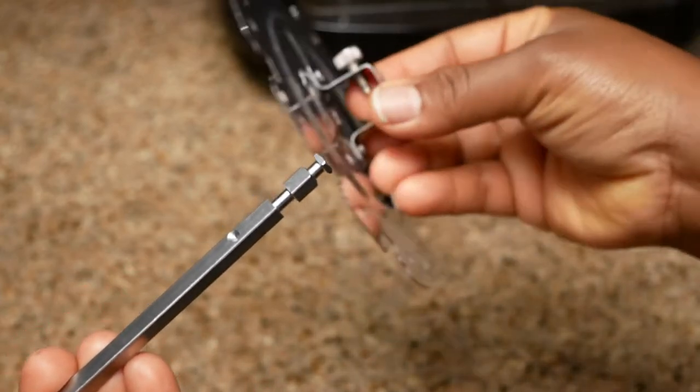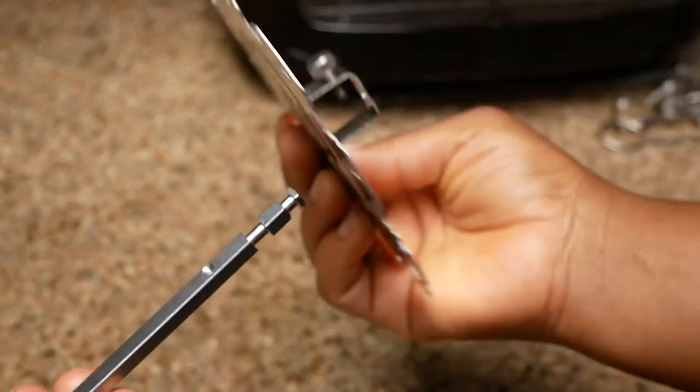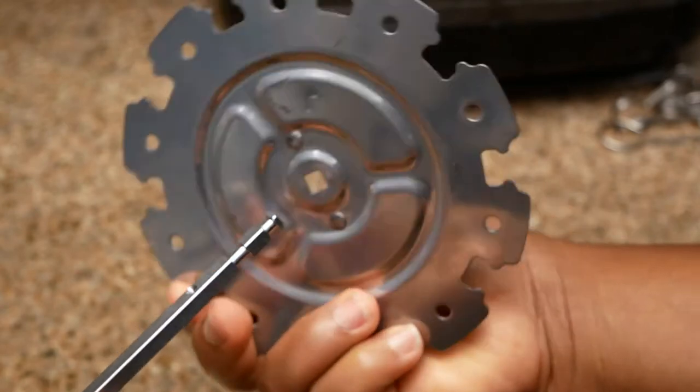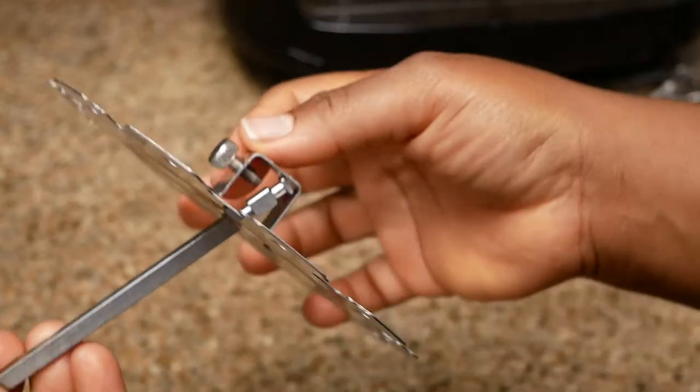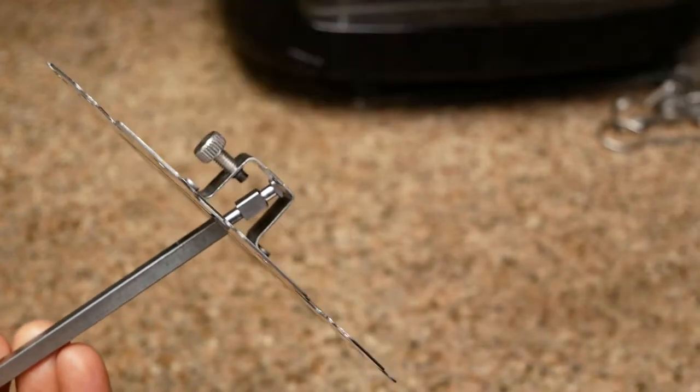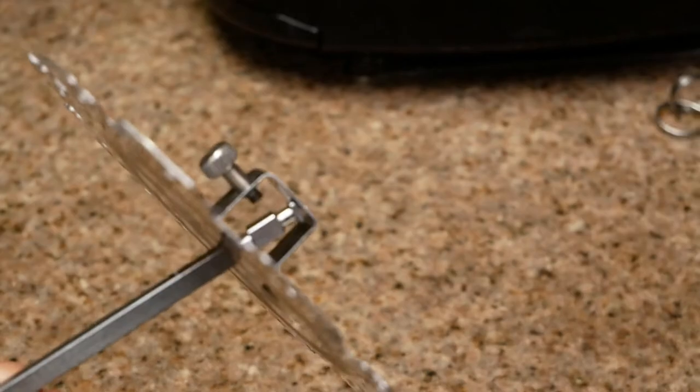Since both racks are identical, it does not matter which end of the shaft you place either one on. As you can see, I put the left skewer rack on the right end of the shaft.